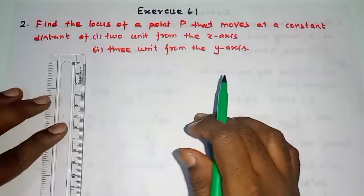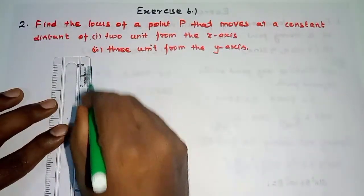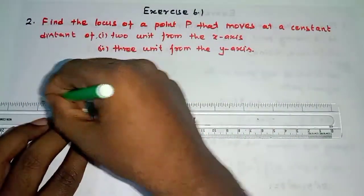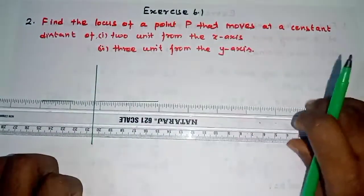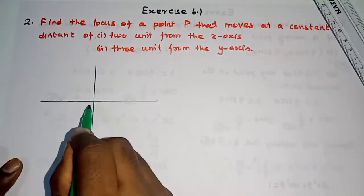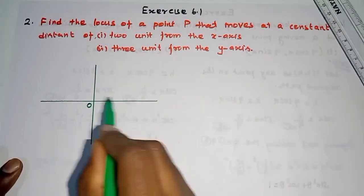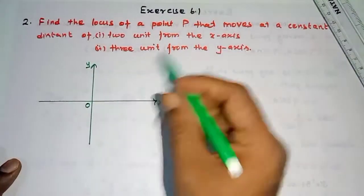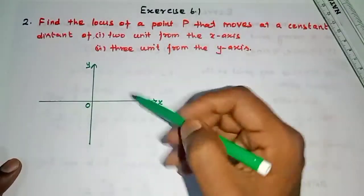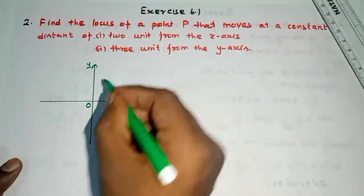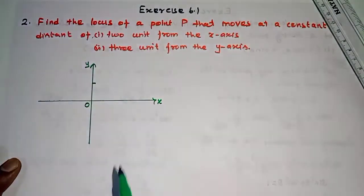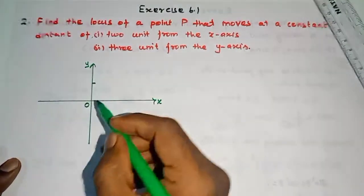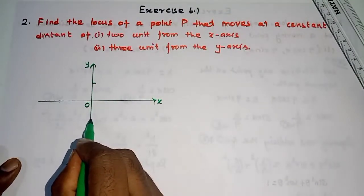2 units from the x-axis. First, I should mention the axis. It is origin, x-axis and y-axis. 2 units from the x-axis. X-axis is 2 units — it is somewhere in the plane. Positive side, negative side, upward, downward — the case on the x-axis, so downward is also applicable.